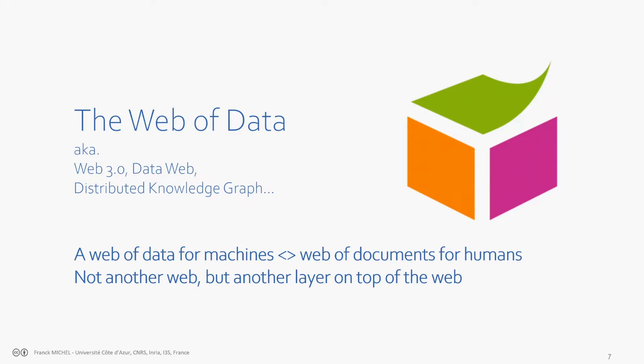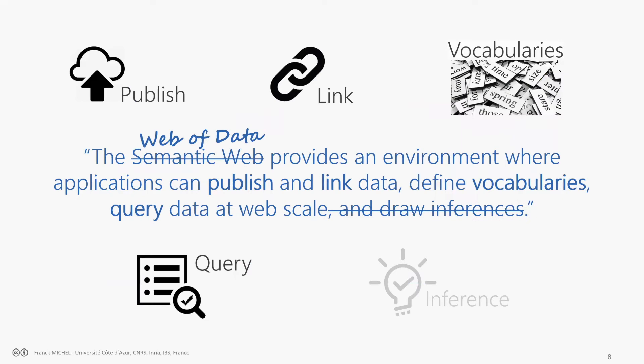When we talk about the web of data, we distinguish between the web of documents and the web of data. The web of documents is meant for humans — the web that you and I check every day. The web of data is very similar; the only difference is that who consumes the data is not humans but machines. So the data has to be structured differently so that machines will understand it. The web of data is not another web — it's just another layer on top of the web.